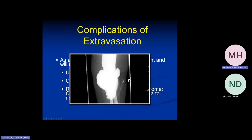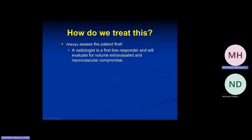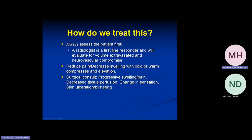In extravasation, the CT tech administers the contrast but instead of going through the vein it goes into the soft tissues. Big deal or not? It depends on the amount of contrast and the patient's risk factors. What we want to avoid is significant ulceration. The protocol: the patient will be assessed by the resident, document everything, remove the IV, apply a cold or warm compress, elevate the arm, and get a surgical consult if there is any neurovascular compromise.